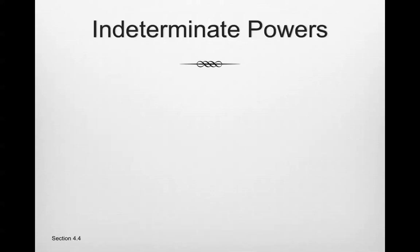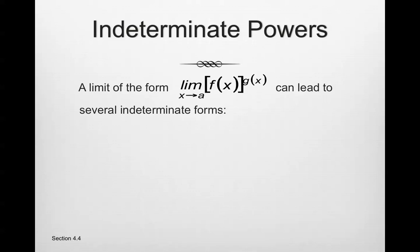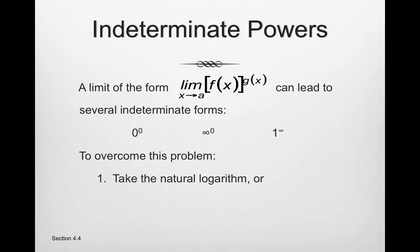There are also indeterminate powers. A limit of the form lim f(x)^g(x) as x approaches a can lead to several indeterminate forms, as discussed before: 0 raised to 0, infinity raised to 0, and 1 raised to infinity. To overcome this problem, we first take the natural log of both sides, or write the limit as an exponential.